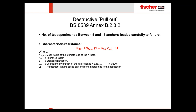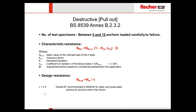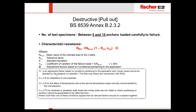Then we calculate omega, which is a reduction factor depending on the installation conditions — for example, if installing in wet substrate or under temperature effects. After calculating the characteristic resistance, we obtain the design resistance by dividing by v, a global safety factor: v = 2.5 for metallic anchors, or v = 5.0 for nylon anchors.